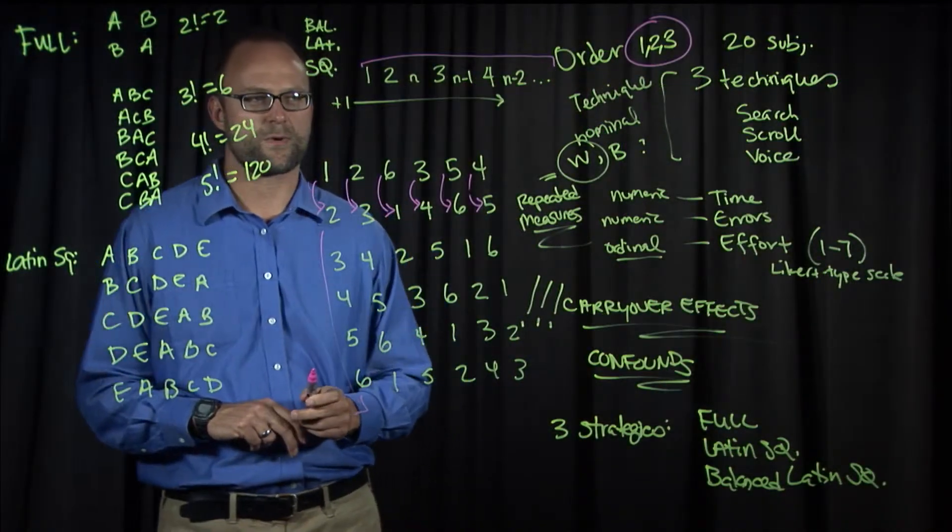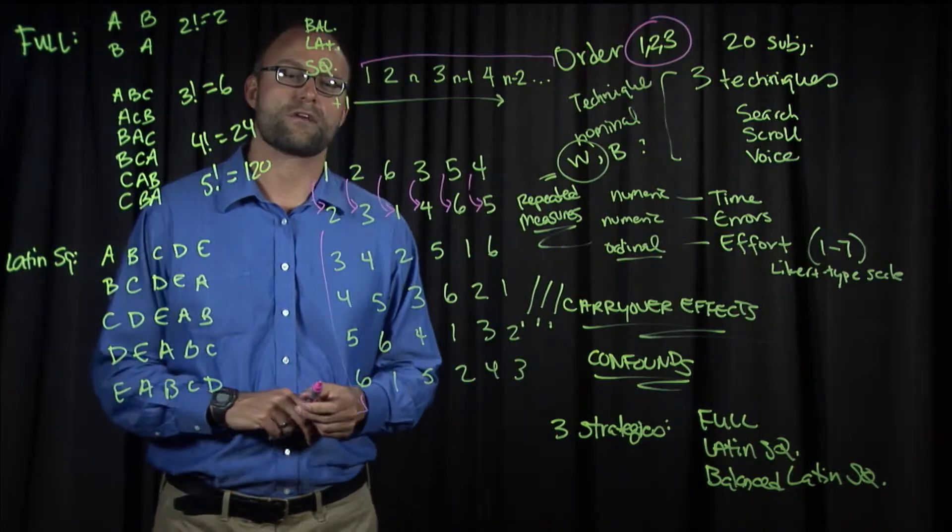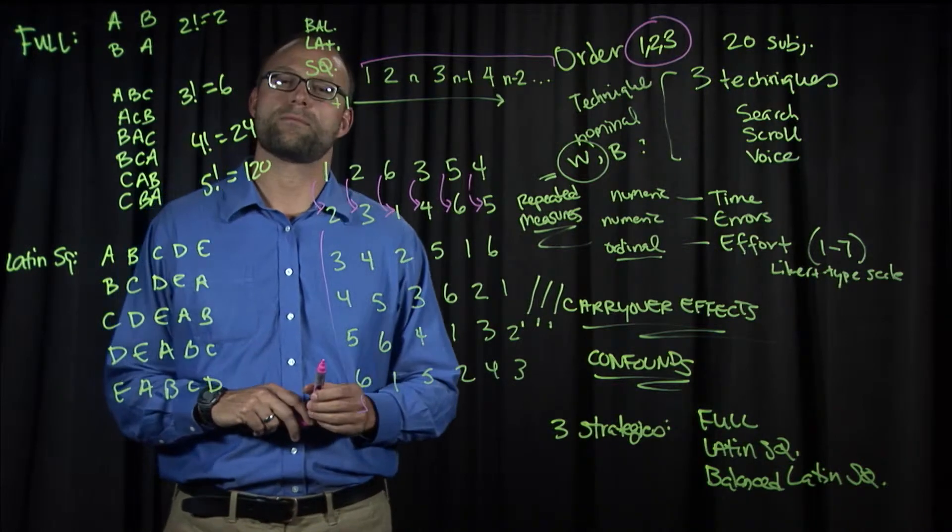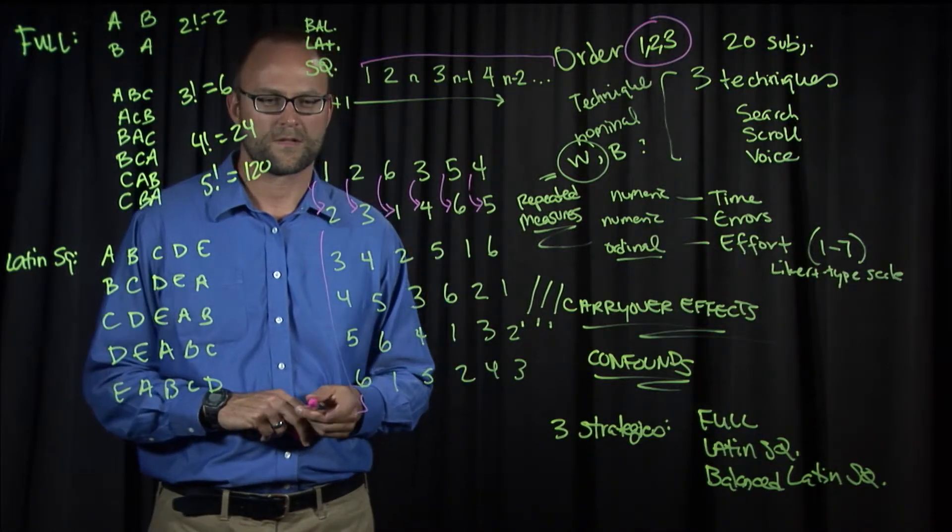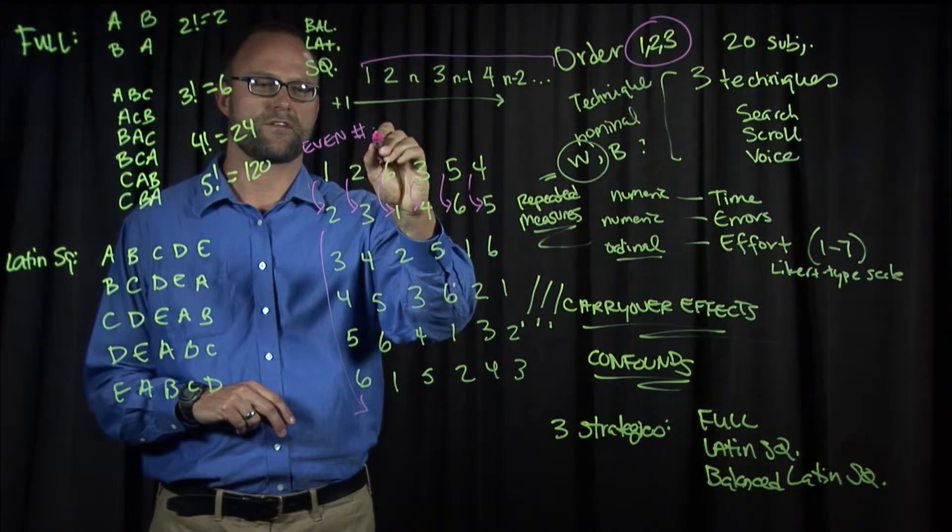The property that a balanced Latin square has is that every condition follows every other exactly the same number of times, which is a very nice property for counterbalancing.